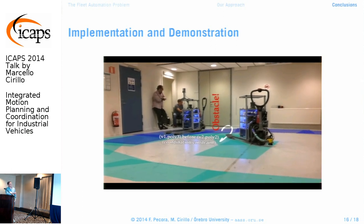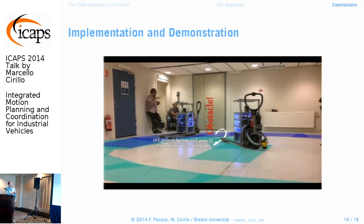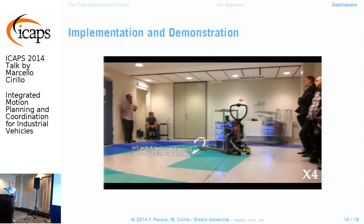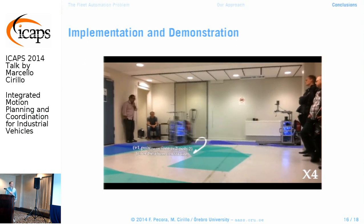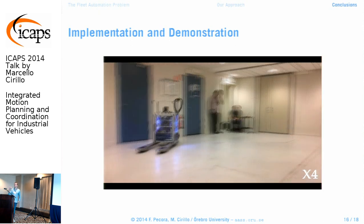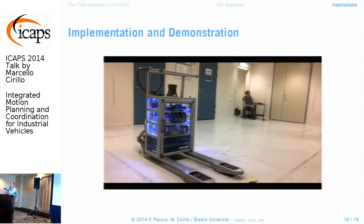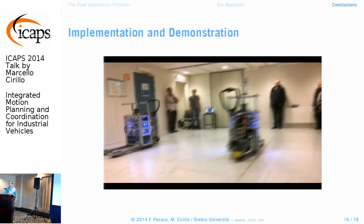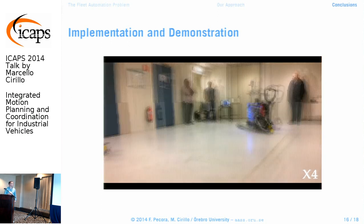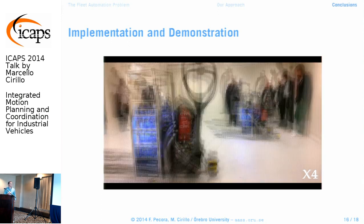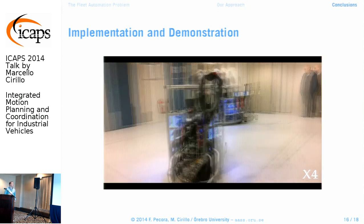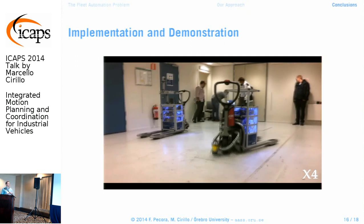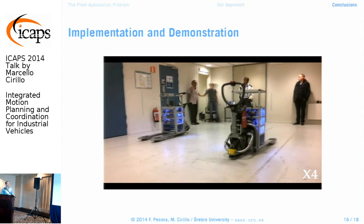We implemented and demonstrated this in a longer demonstration. In one scenario, a vehicle yields to another while a software obstacle has been added, keeping it yielding until the other passes since there is no deadline. In the switch-places scenario, the two trajectories would have conflicted spatially, so the multi-robot motion planner was used to calculate schedulable trajectories that the coordinator then allocated in time to reach the final destination.